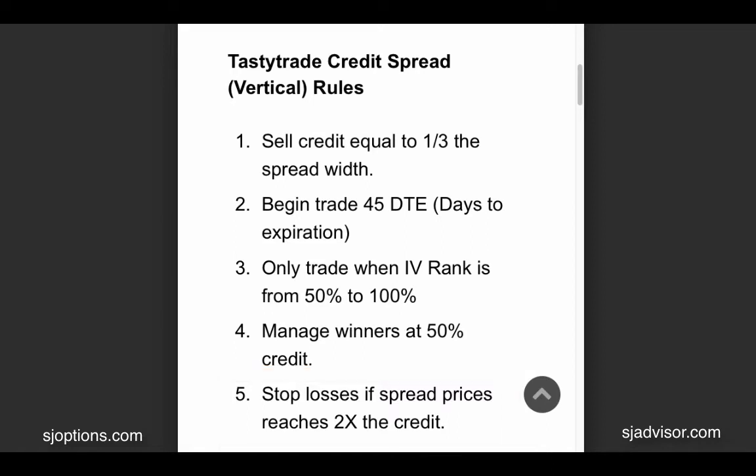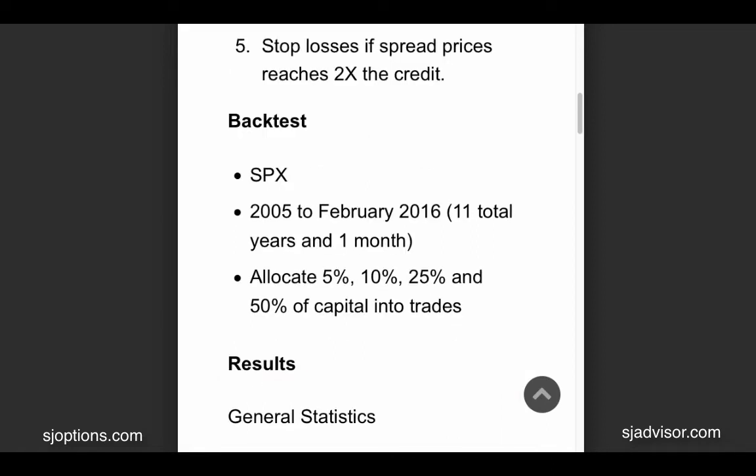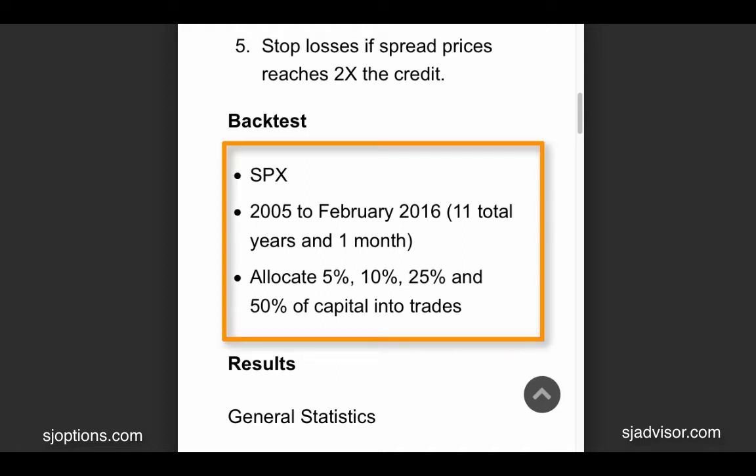So in today's backtest, we're going to be looking at SPX. We perform an entire 11-year backtest from 2005 to February 2016, and we run a few different queries. The first one, we allocate 5% of the portfolio; 10%, 25%, and 50%. And we start with $100,000, but we always leave money in reserve. Those are the capital allocations that we apply to the test.